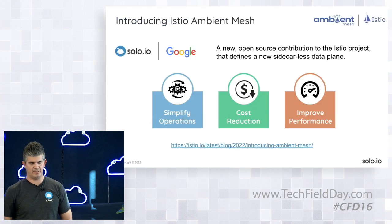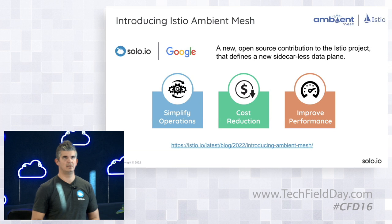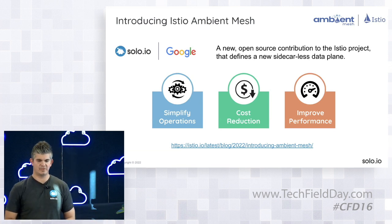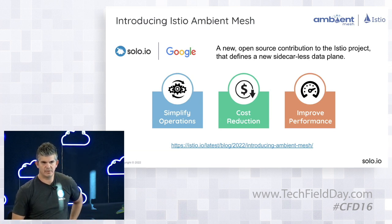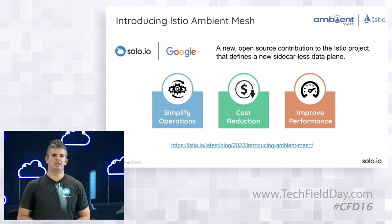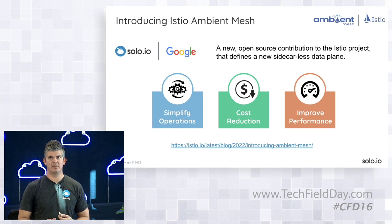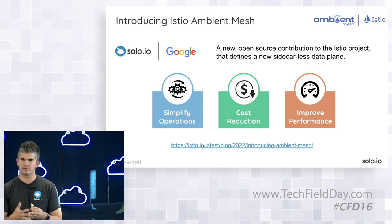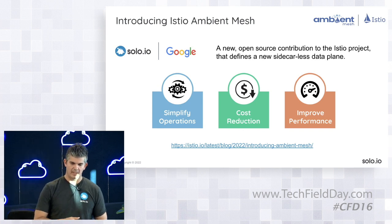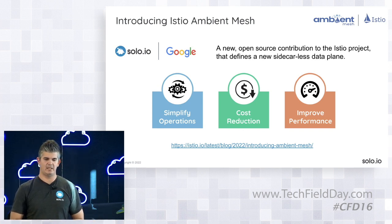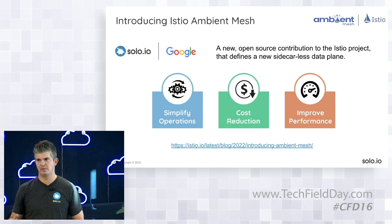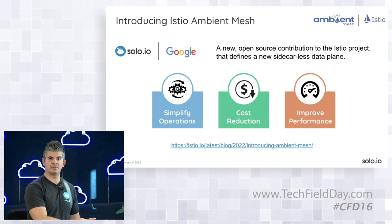In September 2022, we announced through the open source Istio project some work we'd been doing for about a year. About four or five months in, we noticed Google was doing something similar, so we worked with Google and announced it together — a service mesh that we can run without the sidecars, but without taking as many of the drawbacks as the shared node proxy that we saw in the past.